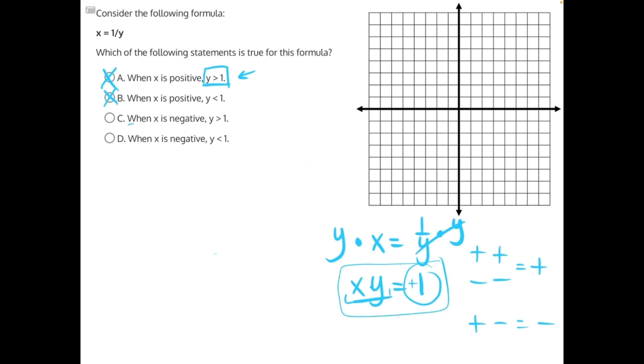So over here, when x is negative, y is greater than 1, all of the values of y that are greater than 1 are all positive. So there is no value of y in this range that makes a negative x value. Therefore, C is incorrect.